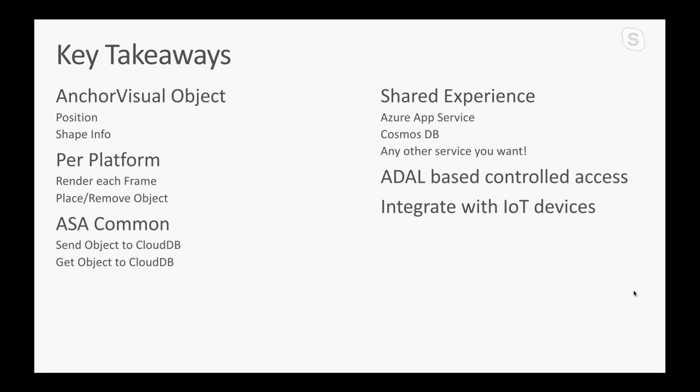Quick recap — what's important to remember if you're working in this space. The anchor visual object — you'll see this word in the docs — is basically that object like the box in this example. It contains information of the position and shape needed. On each platform, because this is a mobile app, you tap into its native views and render it frame by frame — that is your canvas on which you place and remove objects. Your Spatial Anchors layer can be shared between your two apps, as you saw in the common folder, and that's what you use to send the object to your cloud DB and back.